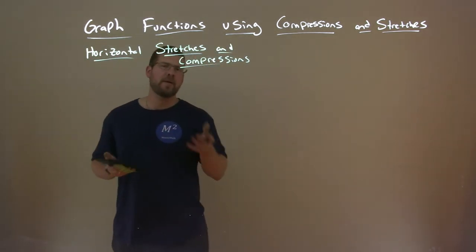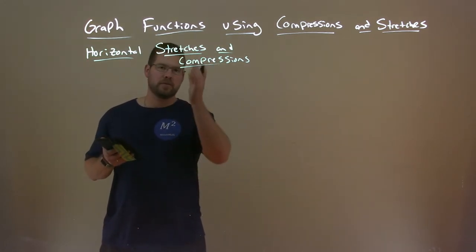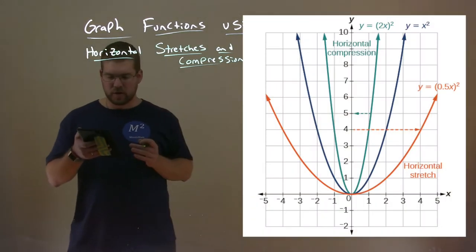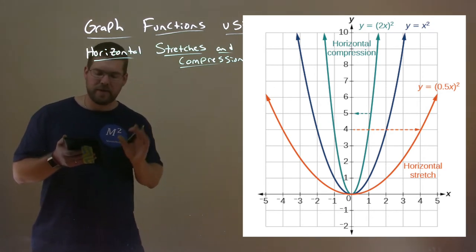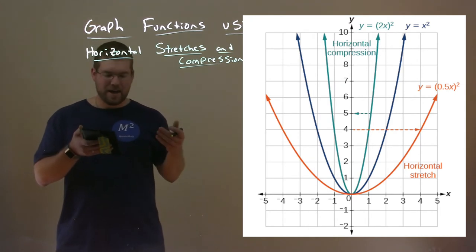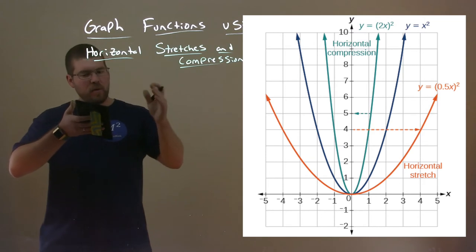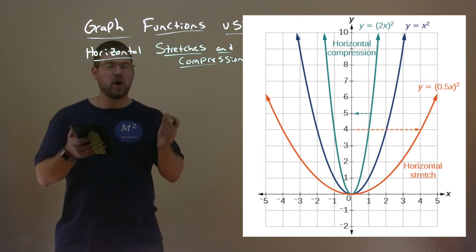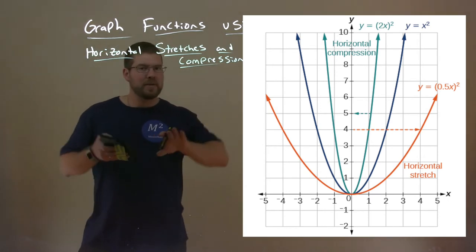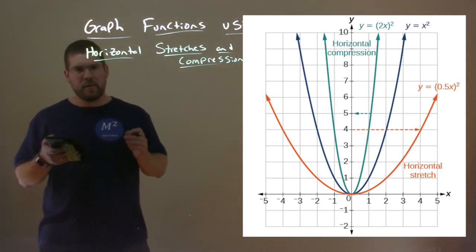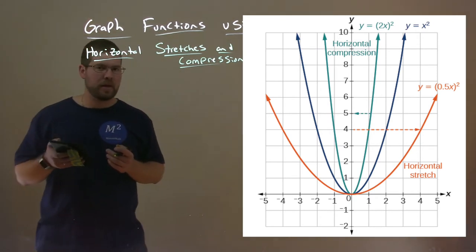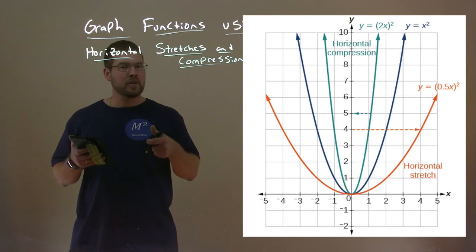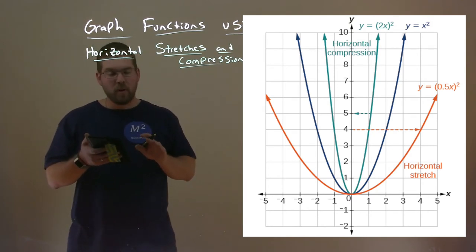Now, having learned about vertical stretches and compressions, we're going to deal with horizontal stretches and compressions. Let's look at this image. We have a function y equals x squared in dark blue. There's a horizontal compression in teal — it's moved in almost by half, but notice that compressing it requires a 2 in front of the x value: y equals (2x) squared. The horizontal stretch in orange uses 0.5 on the inside: y equals (0.5x) squared. It's almost the opposite of what you might think — horizontal compression has a larger value on the inside, and a horizontal stretch has a smaller value on the inside.